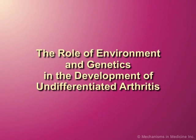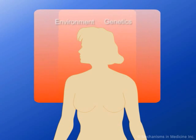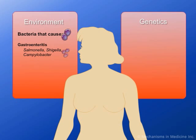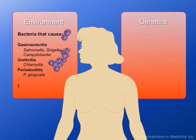The Role of Environment and Genetics in the Development of Undifferentiated Arthritis. Genetic and environmental risk factors for undifferentiated arthritis, or UA, converge to initiate inflammatory joint disease. Environmental risk factors for UA include the bacteria responsible for diseases such as gastroenteritis, arthritis, and periodontitis. Cigarette smoking is also an environmental risk factor.